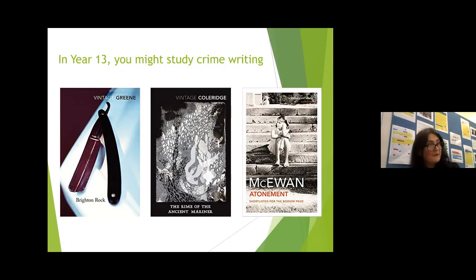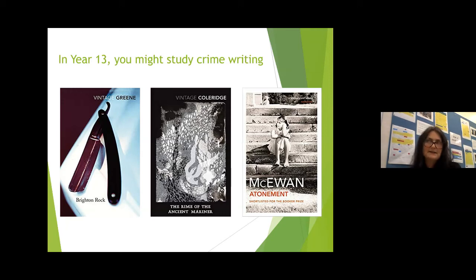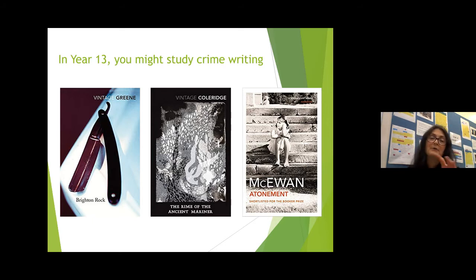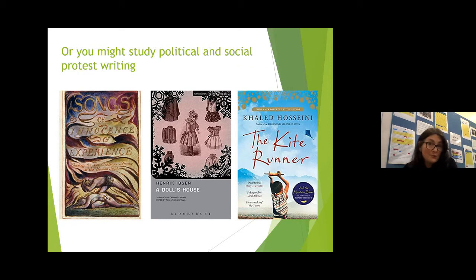In Year 13, there are two pathways and you will study one of them, depending on the teacher and the group you are in. I wouldn't worry about which one you end up studying — students really enjoy both pathways. For the crime pathway, you will look at both novels and poetry: a couple of 20th-century novels — Brighton Rock and Ian McEwan's Atonement — and more poetry, including Coleridge's The Rime of the Ancient Mariner.